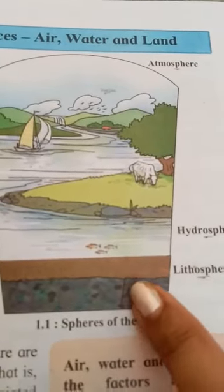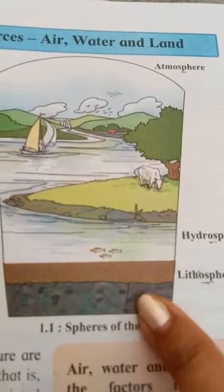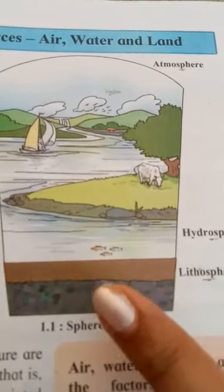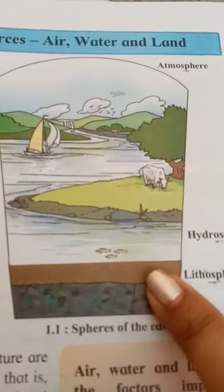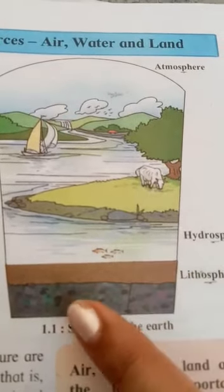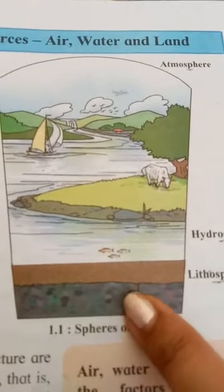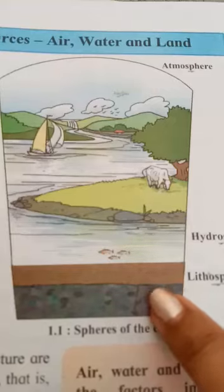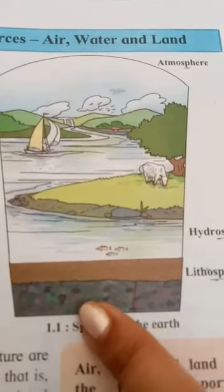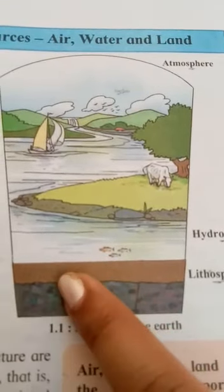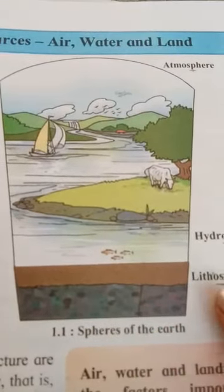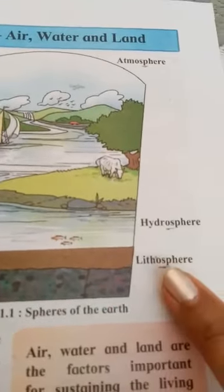See, this layer is called the lithosphere. This is soil and these are stones — soil and stones are present in this layer, which is called the lithosphere.